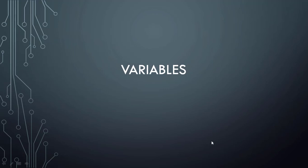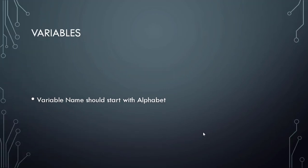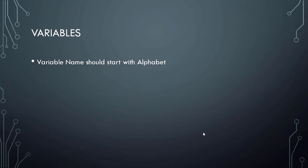Hello guys, welcome to the second tutorial on Unix shell scripting. In this tutorial we will see more about variables. Variables are used for storing some temporary values, so we'll look at how to define a variable and certain rules.